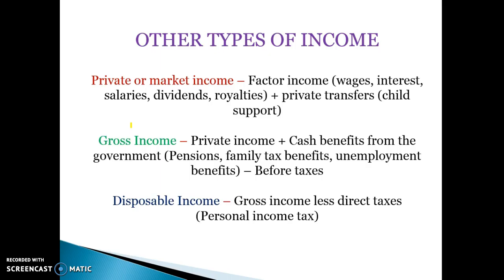There are also a range of other types of income you need to be aware of. The first is private or market income, which is the most inequitable type of income. Market or private income is factor income — the income we receive from wages, salaries, interest, dividends, and royalties — plus private transfers such as child support. It does not include government transfers, only private transfers like child support.